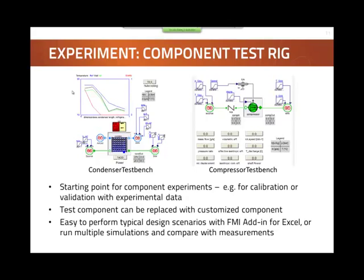I want to show some of the major component test models in the library. We have a template for a heat exchanger test bench and a compressor test bench — these are the starting points for component experiments. If you want to calibrate a certain component with experimental data, it's very easy to replace components with a mouse click. With these models it's very easy to perform typical design scenarios in steady state, for example with the FMI add-in for Excel, and you can easily run multiple simulations, do optimization and calibration, and compare them with measurements.